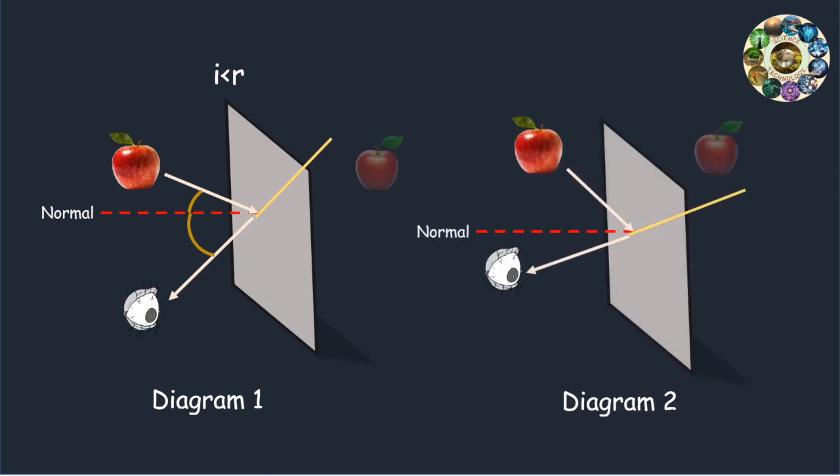In diagram 2, the eye is sighting along a line at a position below the actual image location. In this case, for light from the object to reflect off the mirror and travel to the eye, the light would have to reflect in such a way that the angle of incidence is more than the angle of reflection.